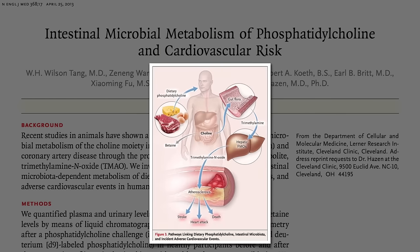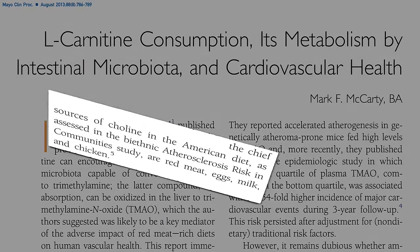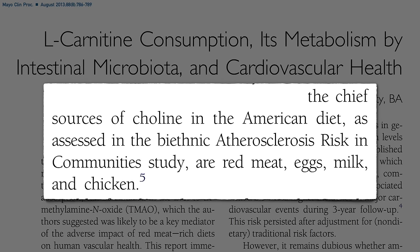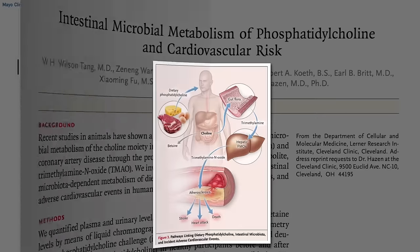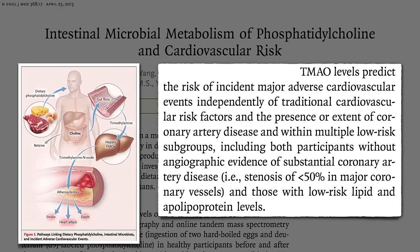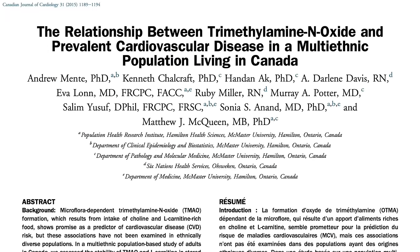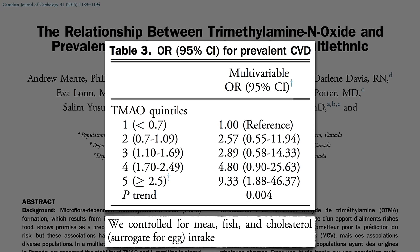Wait a second, though. If high TMAO levels come from eating lots of meat, dairy, and eggs, then maybe the only reason people with high TMAO levels have lots of heart attacks is they're eating lots of meat, dairy, and eggs. Maybe having high TMAO levels is just a marker of a diet high in red meat, eggs, milk, and chicken that's killing people by raising cholesterol levels, and has nothing to do with TMAO at all. One of the reasons we think TMAO is directly responsible is that TMAO levels predict the risk of heart attack, stroke, and death independently of other traditional cardiovascular risk factors — meaning whether or not you have high cholesterol, high blood pressure, having high TMAO levels appears to be bad news. This has since been replicated in other studies, up to nine times the odds of heart disease at high TMAO blood levels, even after controlling for meat, fish, and cholesterol intake, which is a surrogate for egg intake.